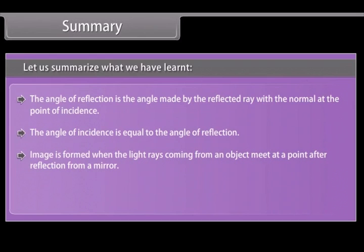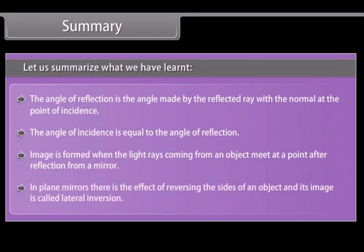Image is formed when the light rays coming from an object meet at a point after reflection from a mirror. In plane mirrors, there is the effect of reversing the sides of an object, and its image is called lateral inversion.